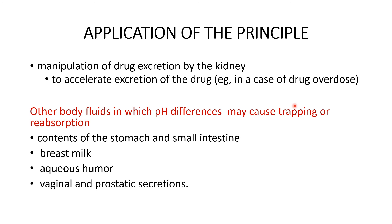This is especially useful in cases of drug overdose or poisoning. Other body fluids in which pH differences may cause trapping or reabsorption of drugs include the stomach and small intestine, breast milk, aqueous humor, and vaginal and prostatic secretions. The pH of these body fluids can also be manipulated so that drugs can get either trapped or reabsorbed, similar to urine manipulation, depending on the nature of the drug.